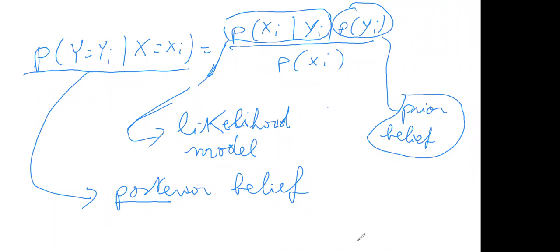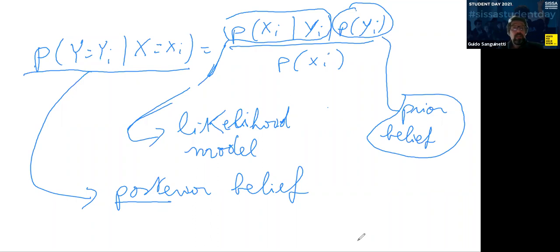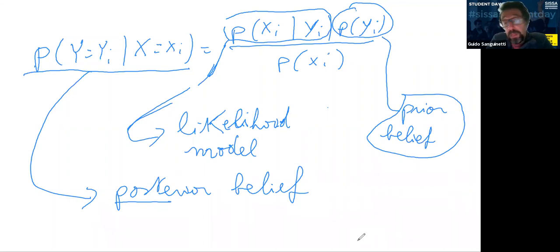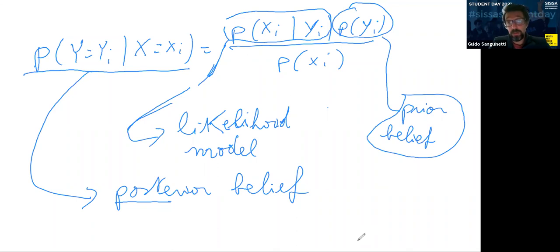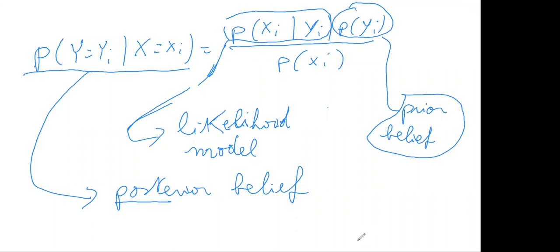Question: is probabilistic modeling possible without a prior belief? It's possible to formulate likelihood models, but if you want to do Bayesian inference you must combine the likelihood model with a prior. You could have absolute certainty that Y equals some value — then Y is not a random variable. If you have multiple random variables, you need something that acts like a prior and something like a likelihood to build a model.